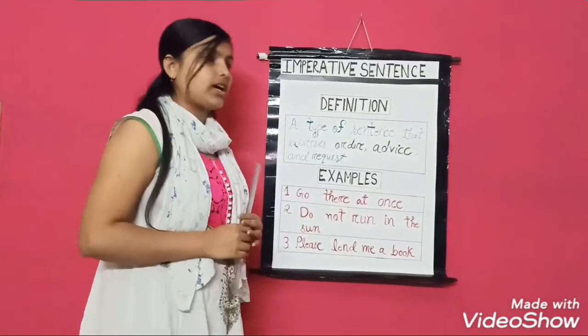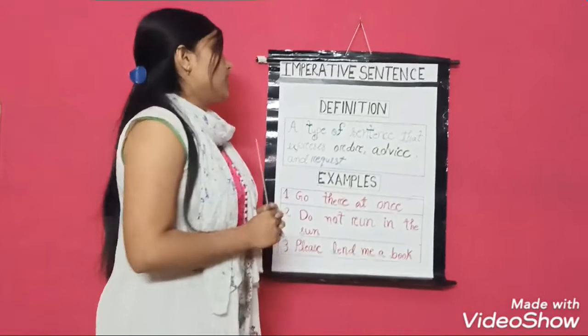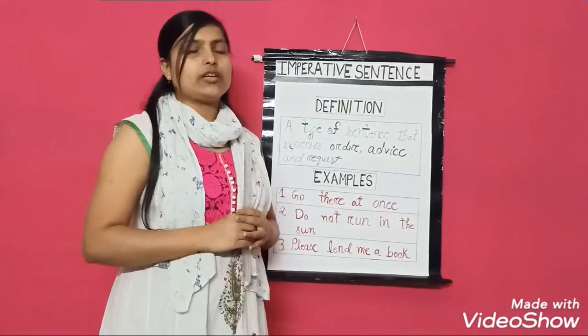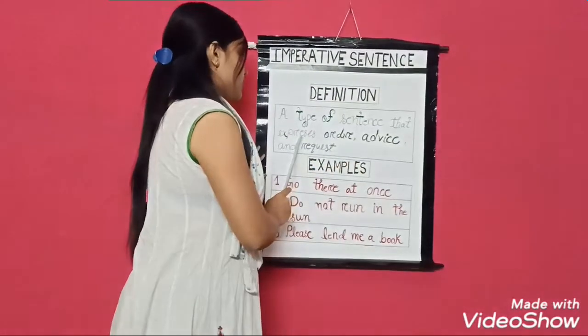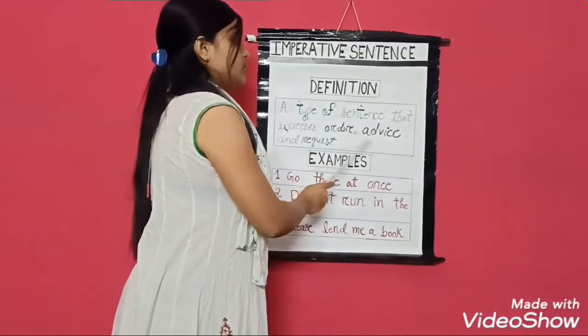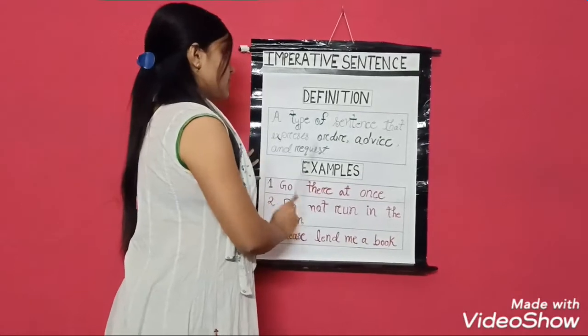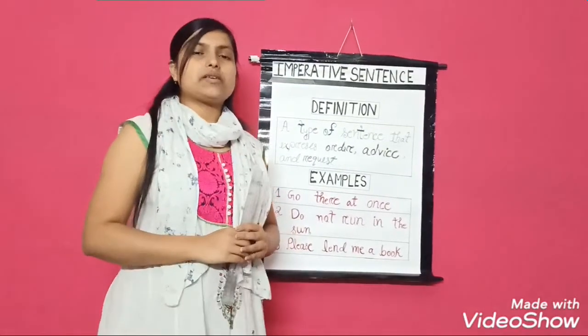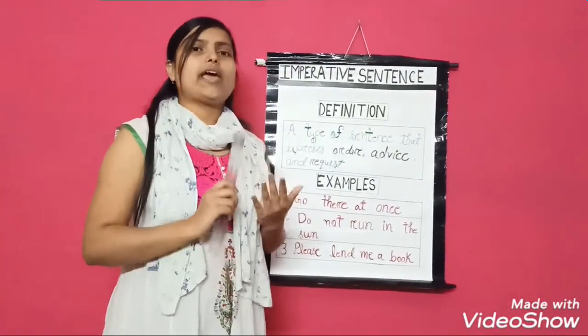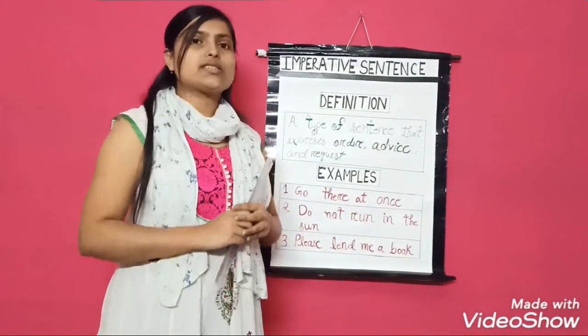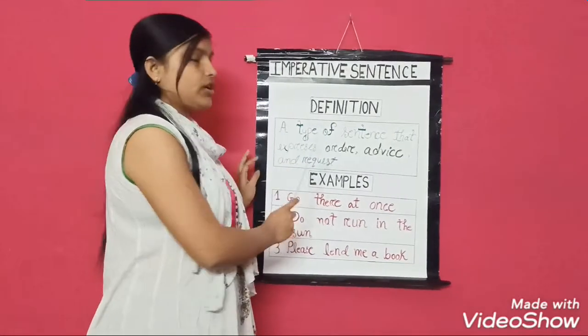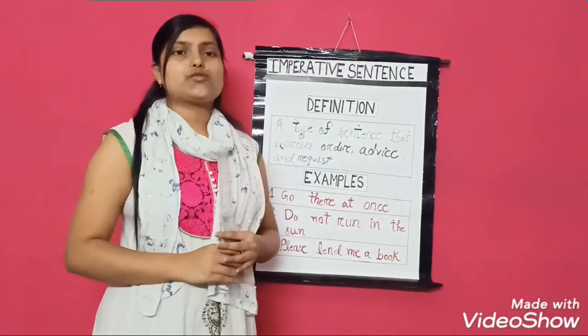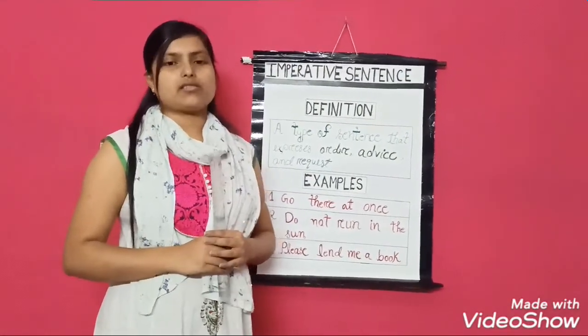So, we come to the conclusion that an imperative sentence is a type of sentence that expresses an order, advice, and request. Whenever you get any sentence which signifies an order, advice, or request, then it will be your imperative sentence.